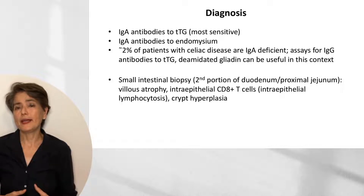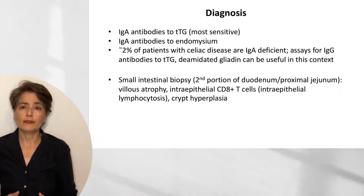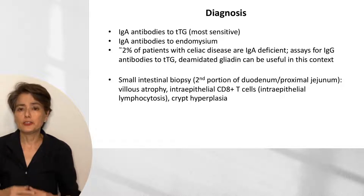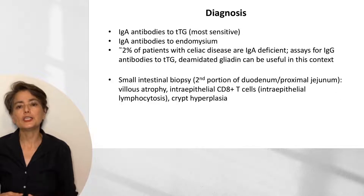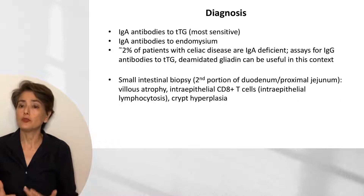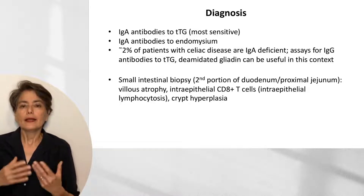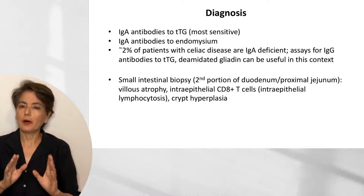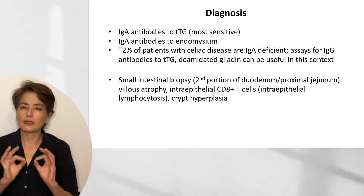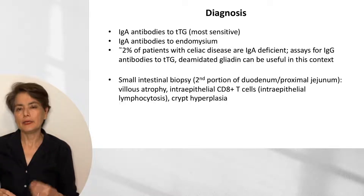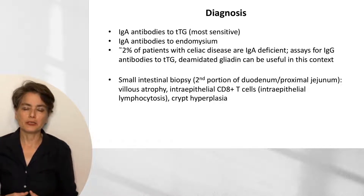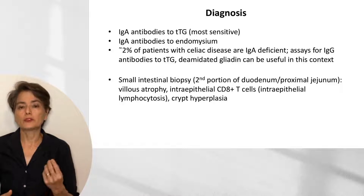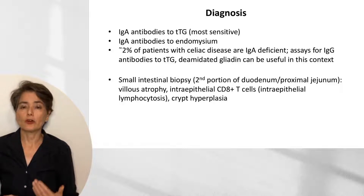A second-line test will be IgA antibodies to endomysium. Keep in mind that about 2% of patients with celiac disease are IgA deficient, so we also have assays for IgG antibodies to tissue transglutaminase and to deamidated gliadin, which can be useful in that context. If you have an off-the-chart positive response on serologic tests with classic symptoms, a small intestinal biopsy may not be necessary, but most of the time it is required for correct diagnosis.